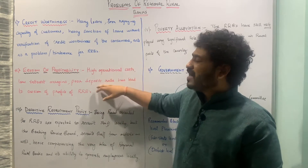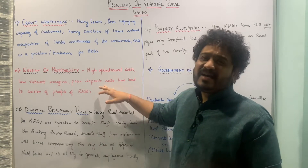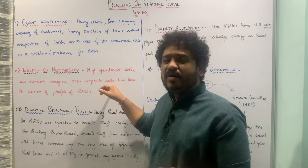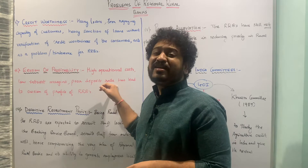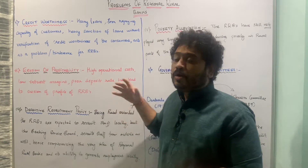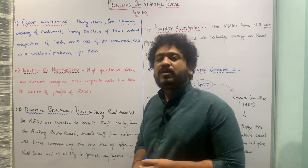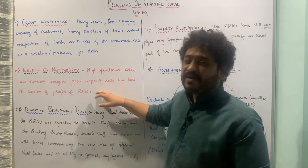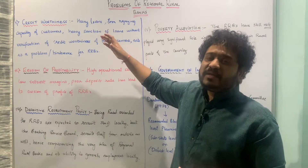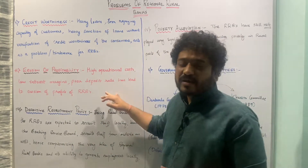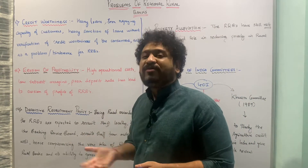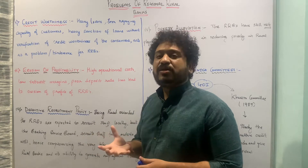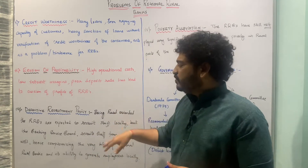These two problems — poor creditworthiness and erosion of profitability — are interlinked and act as a hindrance to the growth of regional rural banks in rural India. The first problem is creditworthiness and the second is erosion of profitability of regional rural banks.